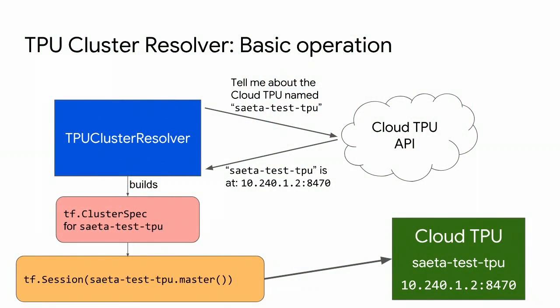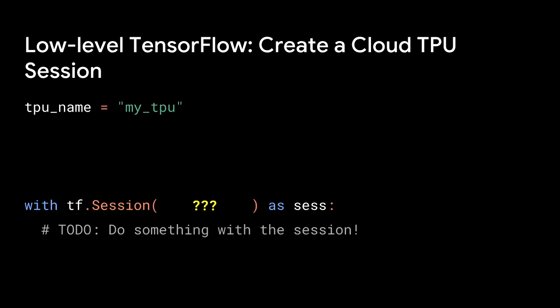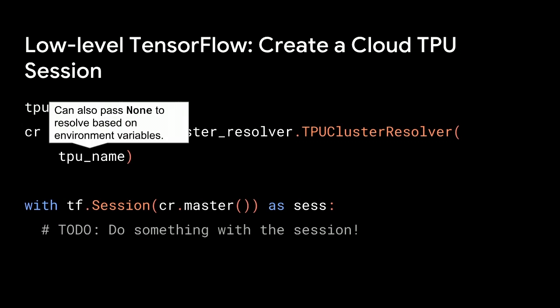To run a computational graph in TensorFlow you create a TensorFlow session, but you can't just pass the TPU name to the session constructor — standard open-source TensorFlow doesn't know anything about Cloud TPUs. So we have TPU cluster resolvers: you pass the name of your Cloud TPU, it contacts the Cloud TPU API, figures out all the metadata, and takes care of the details. If you're using CTPU or Kubernetes Engine, the cluster resolver is clever enough to inspect your environment, so you can pass None and it will figure out what should be there.